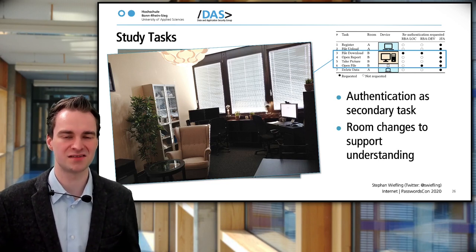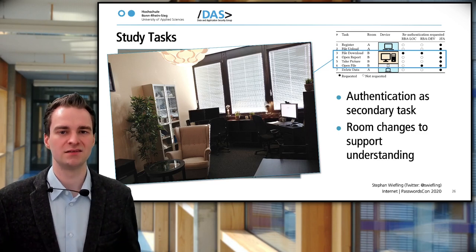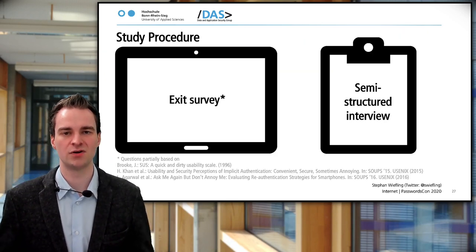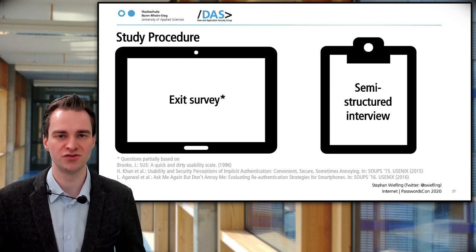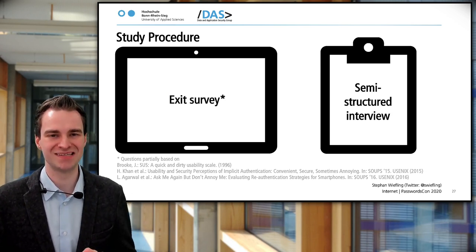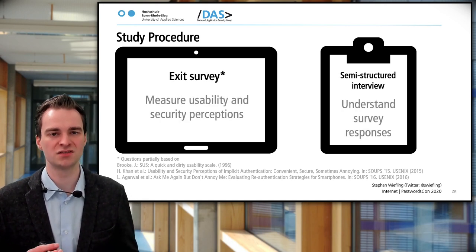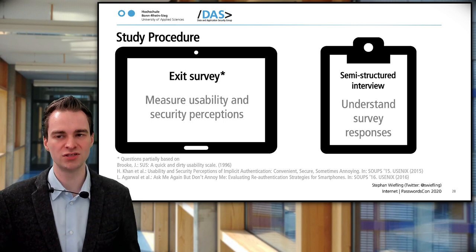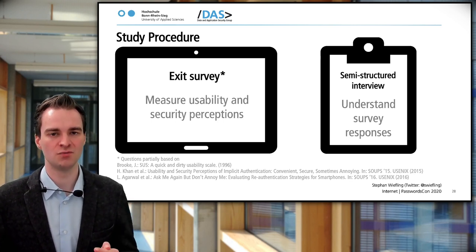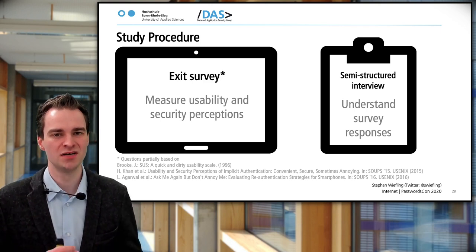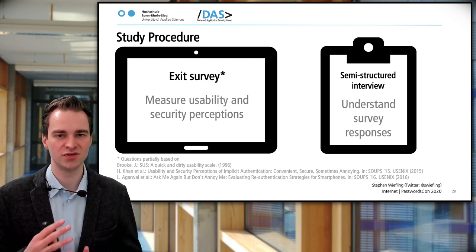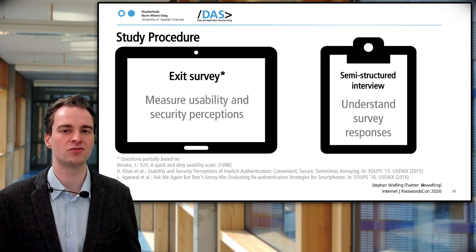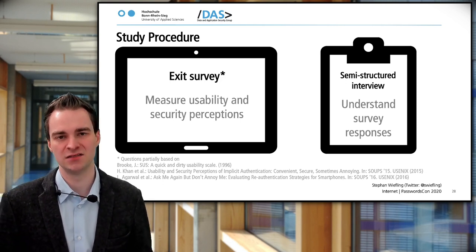In this case, the location-based RBA was triggered. After they finished the tasks, we wanted to figure out their usability and security perceptions. We designed an exit survey with usability and security perception questions. After that, we conducted a semi-structured interview to find out why participants chose certain answers, and also to gather their personal experiences with websites — for example, whether they had previously perceived RBA in the wild.